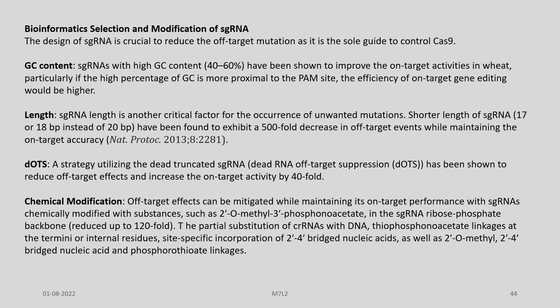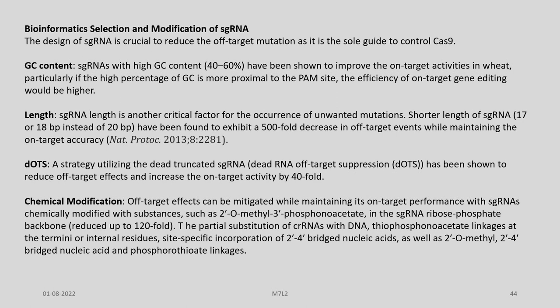The first approach is the use of bioinformatics for selection and modification of single guide RNA. The design of single guide RNA is crucial to reduce off-target mutation, as it is the sole guide to control Cas9. Some important factors are GC content, length, DOTS, and chemical modification. RNAs with high GC content (40–60%) have been shown to improve on-target activities, particularly when the high percentage of GC is more proximal to the PAM side, increasing the efficiency of on-target gene editing.